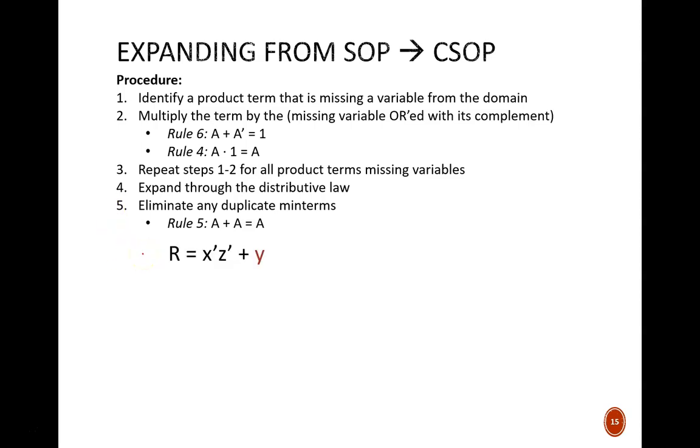In this example, we are given r equals x'z' or y. This is in standard SOP form. Yes, that lonely y counts as its own product term. The domain consists of three variables: x, y, and z. This first product term is missing a y, so we include that y by multiplying the original term by y or y'. The second product term is missing both x and z. To include those, we multiply this term by x or x', and also z or z'. This is akin to multiplying a numeric algebraic expression by one. At this point, we have already completed step three.